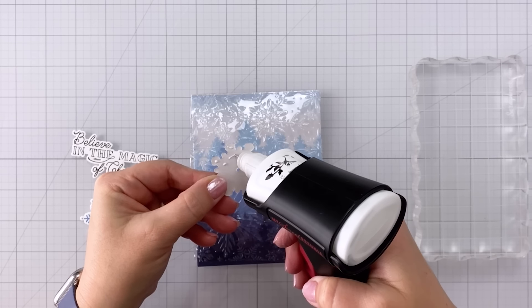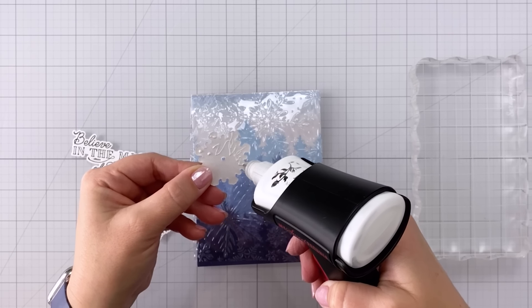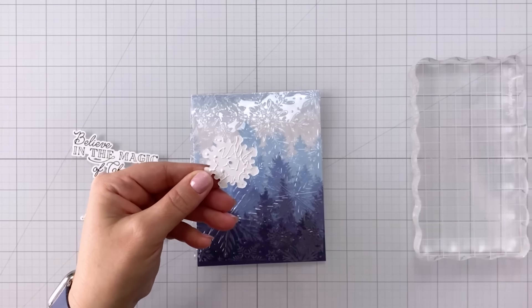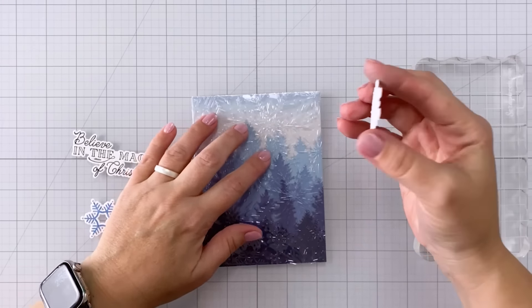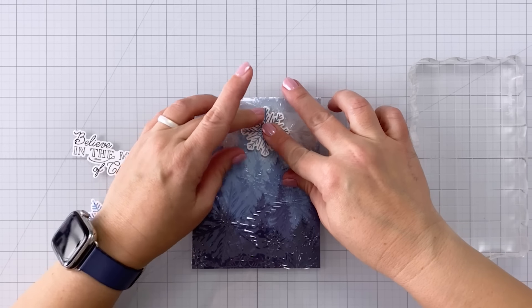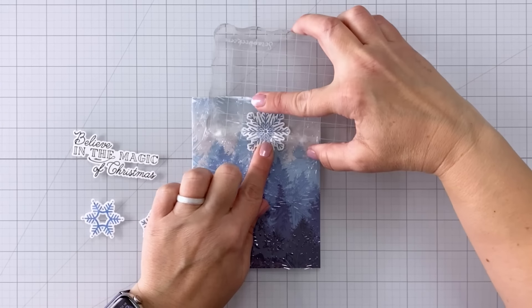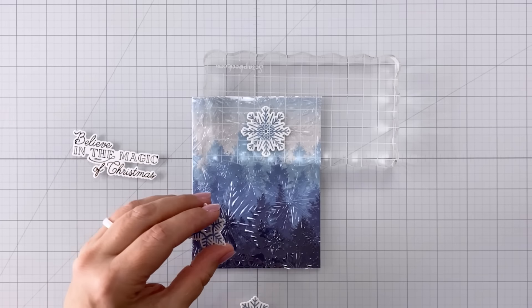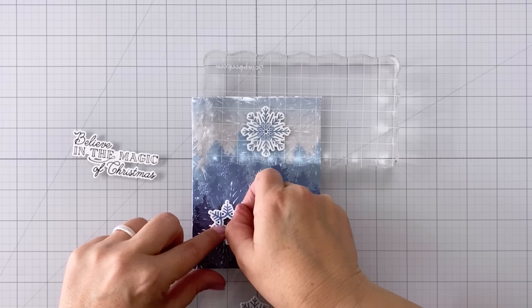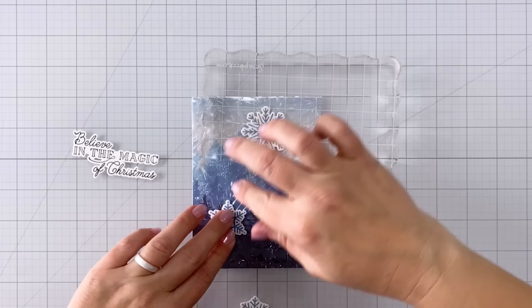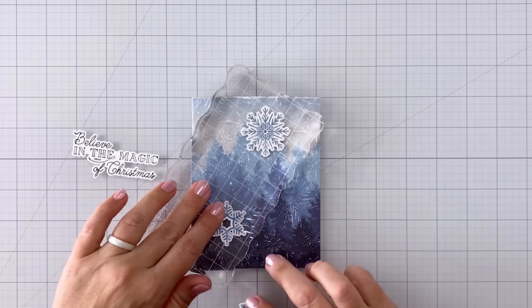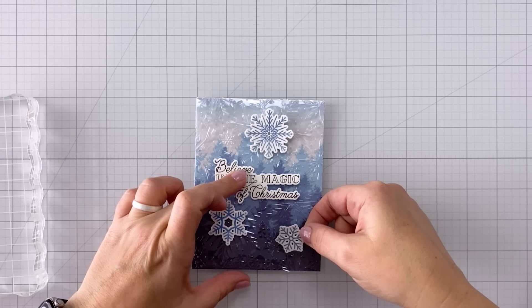To adhere the snowflakes and my sentiment I'm actually using liquid adhesive. Now this does take quite a bit longer to dry on the acetate because the acetate is not porous. So what I'm doing is I have a stamping block there and I'm just going to set it on top while the glue starts to dry so that way it holds it in place. You could use double-sided tape, but I just find that the liquid glue, yes it takes some time to dry, but then I know it's going to stay on there.